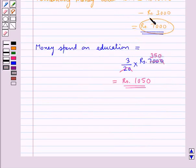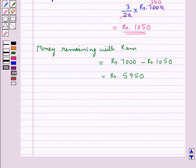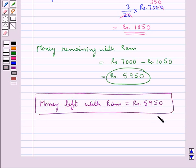From the Rs 7,000 left with him, he has spent Rs 1,050 on education. So money remaining with Ram is equal to Rs 7,000 minus Rs 1,050, which is equal to Rs 5,950. Thus our final answer is money left with Ram is equal to Rs 5,950. This completes the session. Hope you have understood the solution for this question.